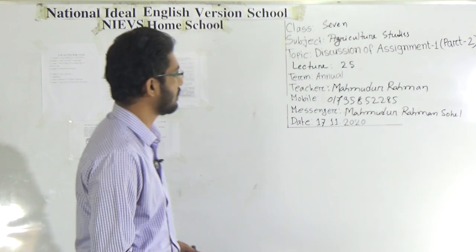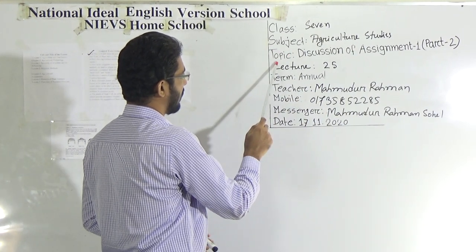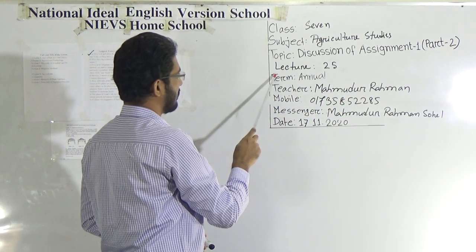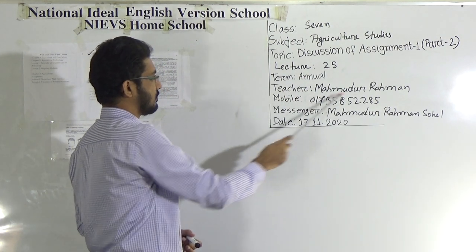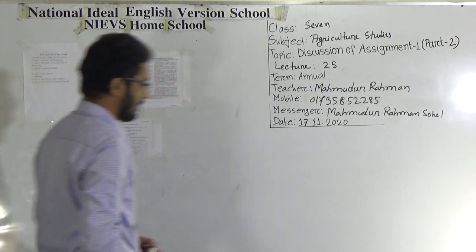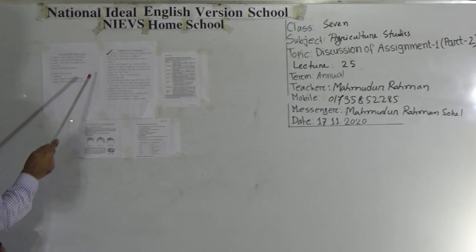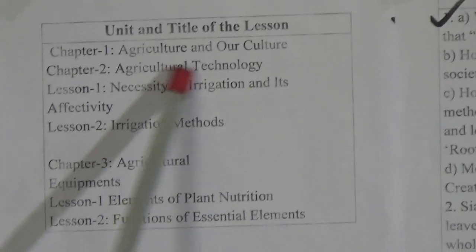To the students, look at the board. Subject: Agriculture Studies. Topic: Discussion on Assignment 1, Part 2. This is your lecture No. 25. Dear students, look into your assignment topic once again. The unit and title of the lesson of your assignment No. 1 is Chapter 1, Agriculture and Our Culture.